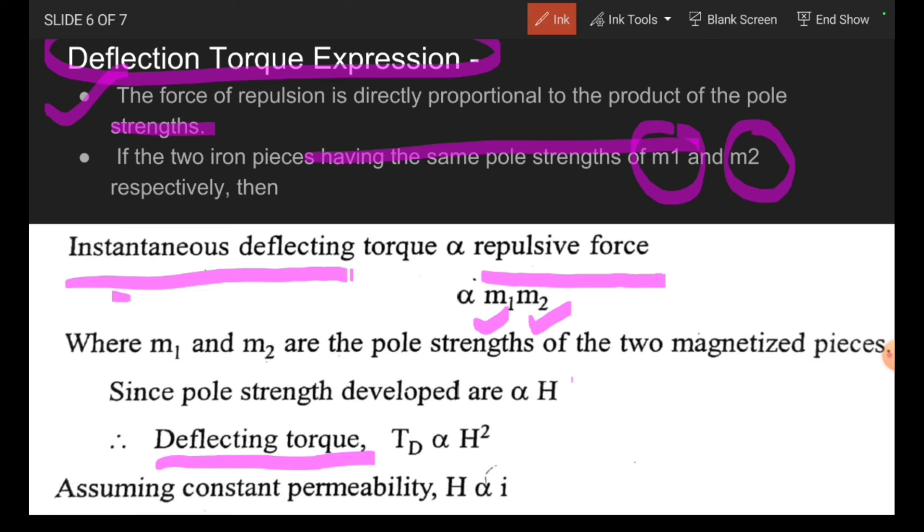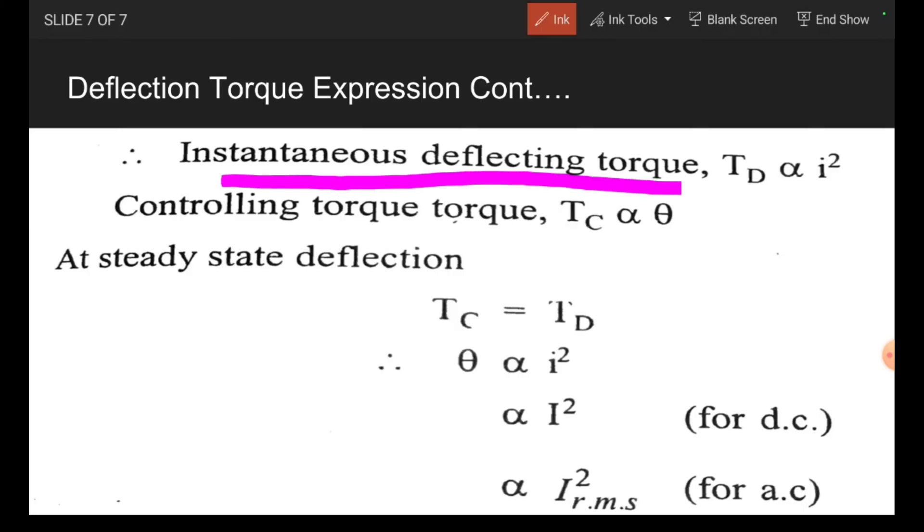Therefore, deflecting torque Td is proportional to H squared. Assuming constant permeability, H is proportional to the I value. Therefore, instantaneous deflecting torque Td is proportional to I squared. Controlling torque Tc is proportional to theta.